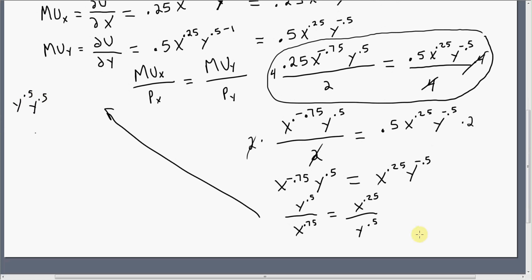So I'm just multiplying everything through by Y to the 0.5, Y to the 0.5. Now I'm going to do the same thing with this term down here, multiply everything through by X to the 0.75, X to the 0.75. And you'll notice what happens. These will cancel, these will cancel, and you're going to be left with what I have over here. And just adding up the exponents, we get Y equals X.